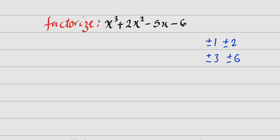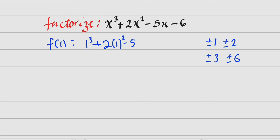If x is equal to 1, we have 1 to the third power, plus 2 multiplied by 1 to the second power, minus 5 multiplied by 1, minus 6. If this is equal to 0, then 1 is said to be one of the roots.